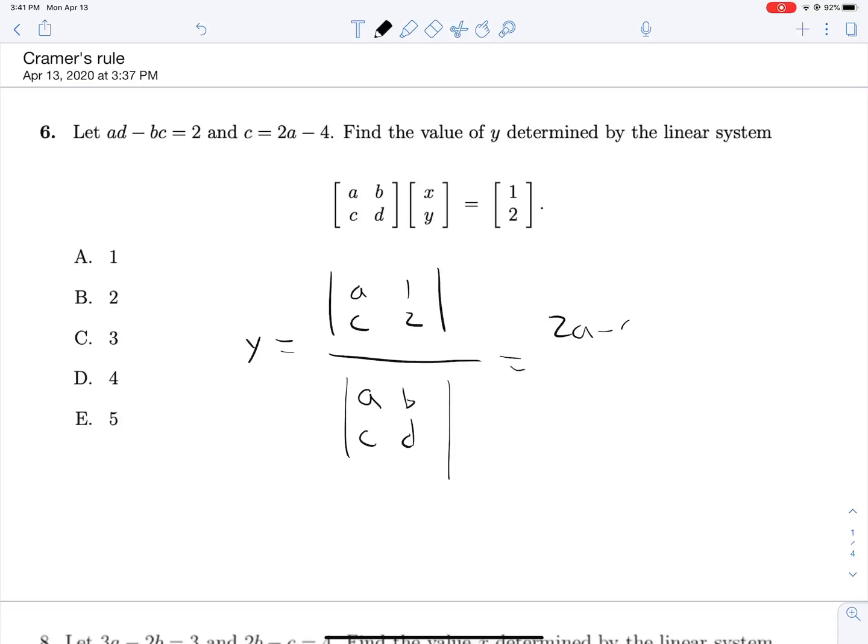This will give us 2A minus C and AD minus BC. We're told that AD minus BC right up there is equal to 2, and we can take this numerator and say 2A, not 2A is equal to C, but 2A minus C is in a form where we can kind of rearrange it and figure out what's going on over here.